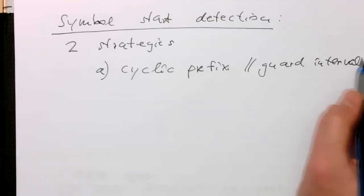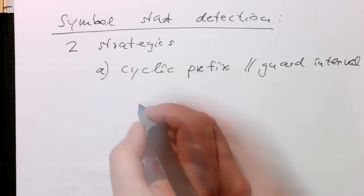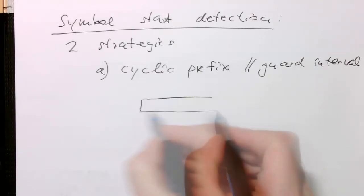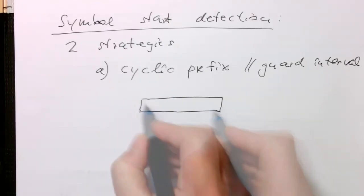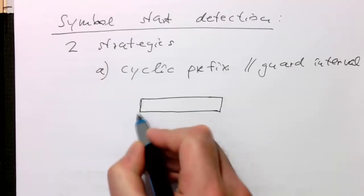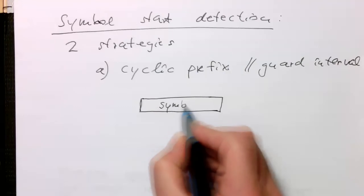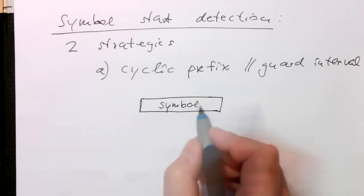The guard interval or cyclic prefix, the idea is the following. Let's take our symbol here. That's usually the one which is already coming out of the bandpass modulator. That's our symbol, our real symbol usually.